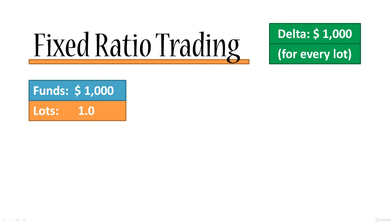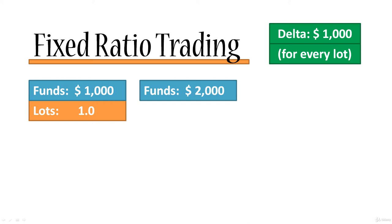What the fixed ratio money management method tells us is when we should increase to two lots and so on. What delta means in the fixed ratio money management method is that it tells you exactly when you need to increase your lots to the next step — from one to two, from two to three, and so on. Every single one of your lots that you're currently trading with has to first earn a delta, and then you can move on to the next level.